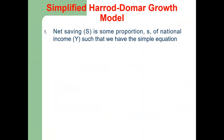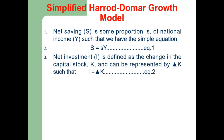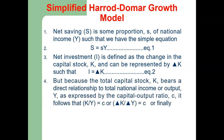We start as follows. Equation 1: net saving S is some proportion s of national income Y, so S = sY. Equation 2: net investment I is defined as the change in the capital stock K, represented by delta K, such that I = delta K. Equation 3: because the total capital stock K bears a direct relationship to national income Y as expressed by the capital output ratio C, the ratio of capital stock to GDP equals C, or equivalently delta K = C times delta Y.